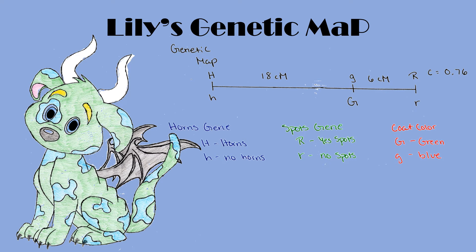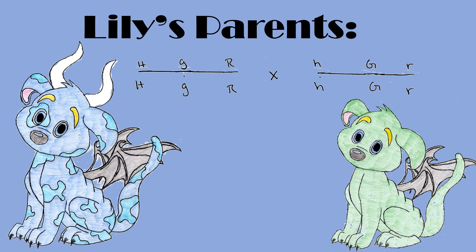But how did we get Lily's genetic map? Here are Lily's parents. Her mom is a homozygous blue coated spotted horned bibble, while her dad is a homozygous green coated, unspotted, unhorned bibble.